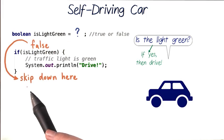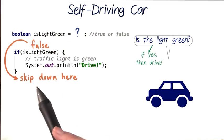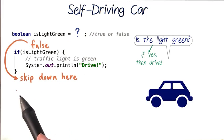If our test condition isn't met, if isLightGreen is false, Java will skip over our if code and go to the end of this closing curly brace. And if there are more lines of code below, it will continue reading from there.